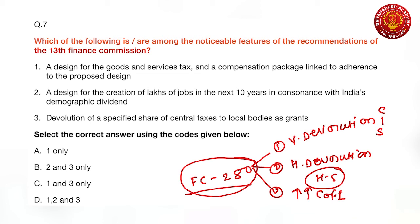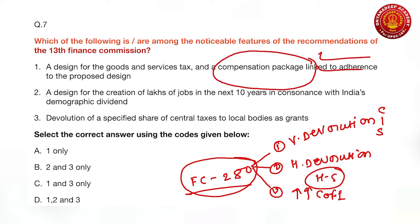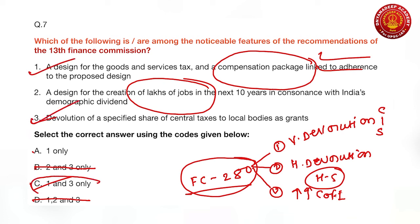For the options: a design for GST and a compensation package could be part of finance commission's work. However, creation of jobs is an executive function, never a function of the Finance Commission, so the second option is wrong — eliminating options B and D. The third option — devolution of a specific share of central taxes to local bodies as grants — is correct. So the correct answer is C, that is one and three.